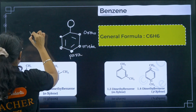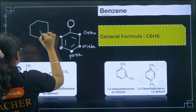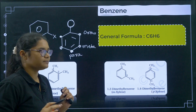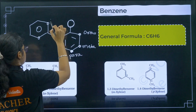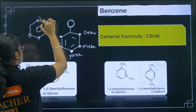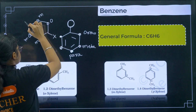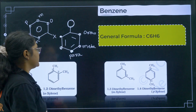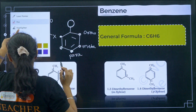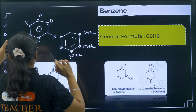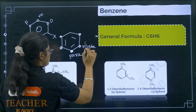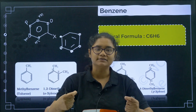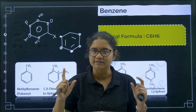Students often get confused about which position is ortho and which is para. Remember: wherever a group is attached to the benzene ring, the adjacent two positions are ortho, the next two are meta, and the exact opposite one is para. Also, if there is no substituent — meaning only H is attached — there is no concept of ortho, meta, or para. These concepts only apply when a substituent is attached to the benzene ring.